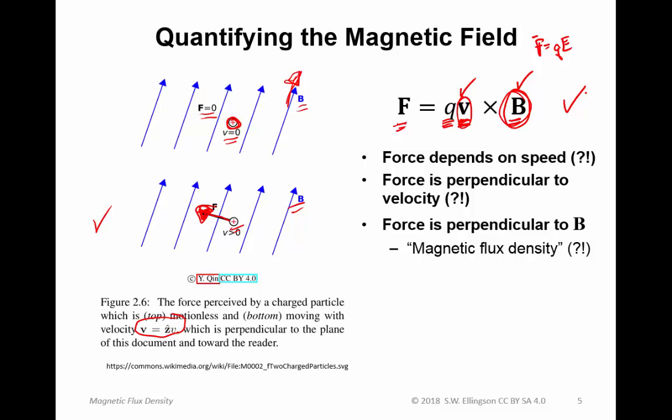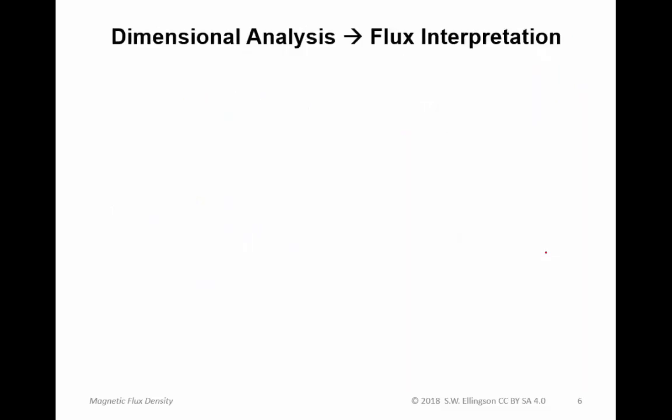I've been using the term magnetic flux density. When we talked about the electric field, we talked about electric field intensity. Now we're talking about a magnetic flux density, so clearly we have some other interpretation in mind for how the field works. Just hold that thought and we'll come back to that. So, a little dimensional analysis, which will lead us to some insight into the interpretation of the magnetic field as a flux.